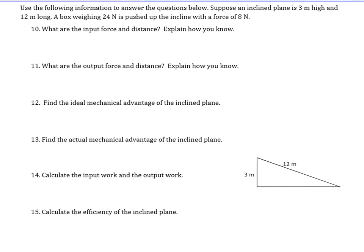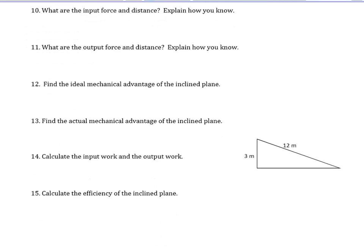This problem is pretty straightforward — it's just a whole bunch of math. You need to know all your equations, but you also need to be able to find input and output quantities. Remember: input is what you do, output is what the machine does. I always like to draw in my object so I can keep track of it. It says this is a 24-newton object, so it weighs 24 newtons, and it takes 8 newtons of force to push it up the incline. If you get stuck on this, check the key — it should be pretty straightforward. It's mostly terminology you need to start getting familiar with.